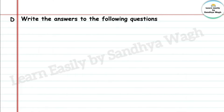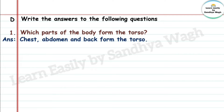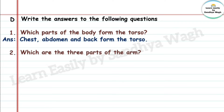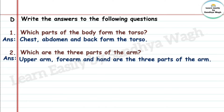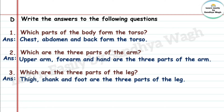Section D — Write the answers to the following questions. Question 1: Which parts of the body form the torso? Answer: Chest, abdomen, and back form the torso. Question 2: Which are the three parts of the arm? Answer: Upper arm, forearm, and hand. Question 3: Which are the three parts of the leg? Answer: Thigh, shank, and foot.